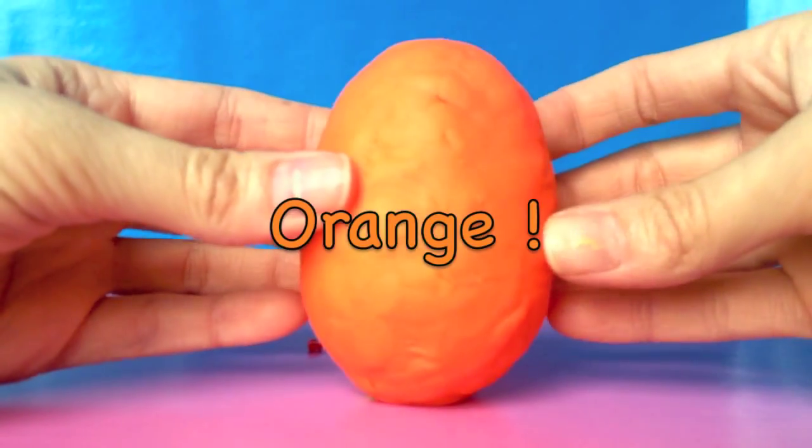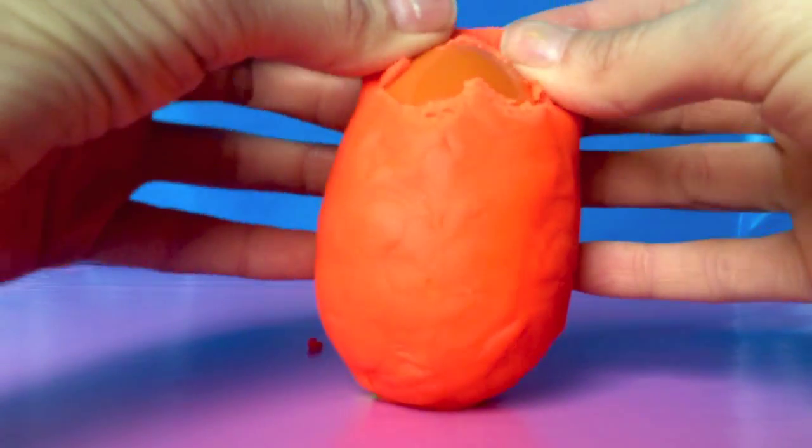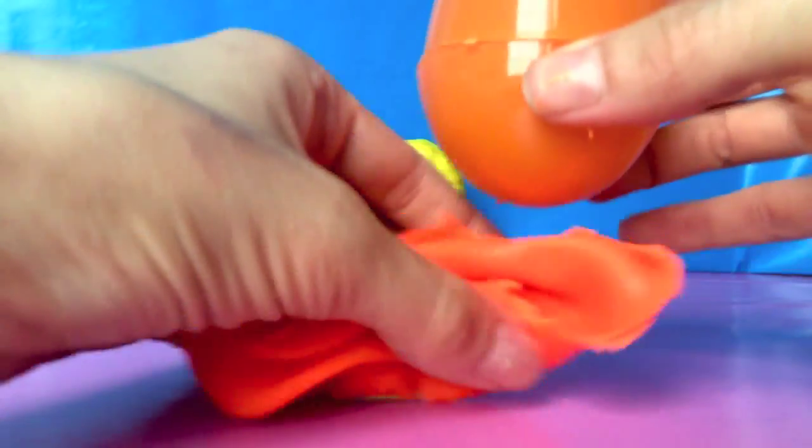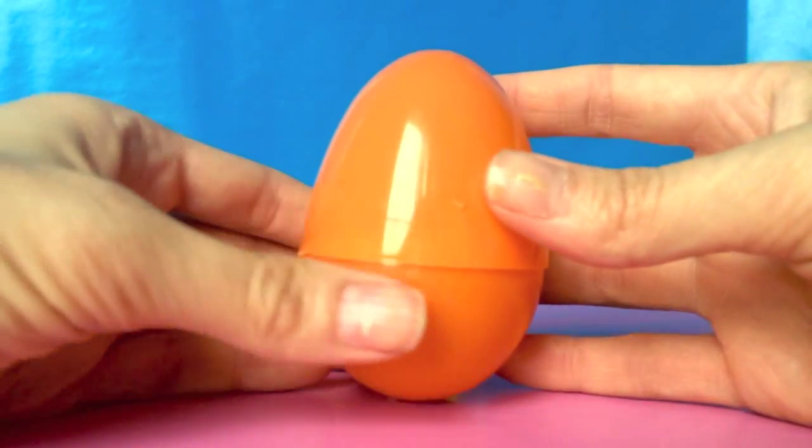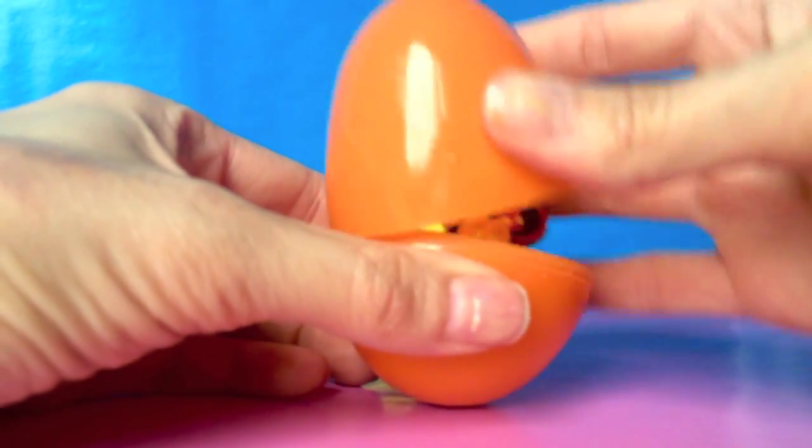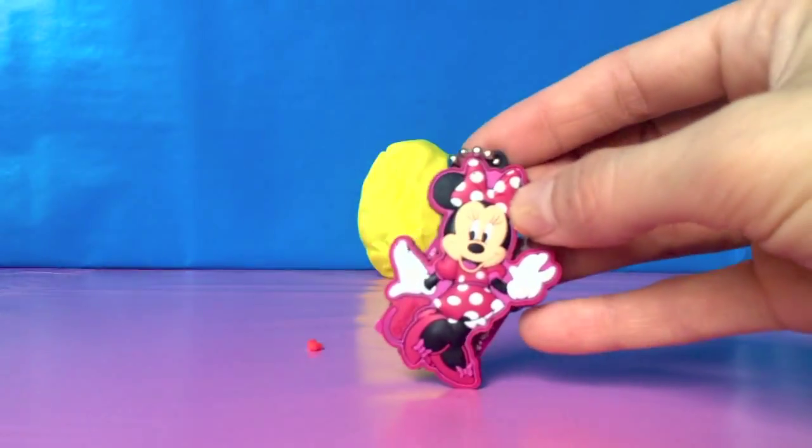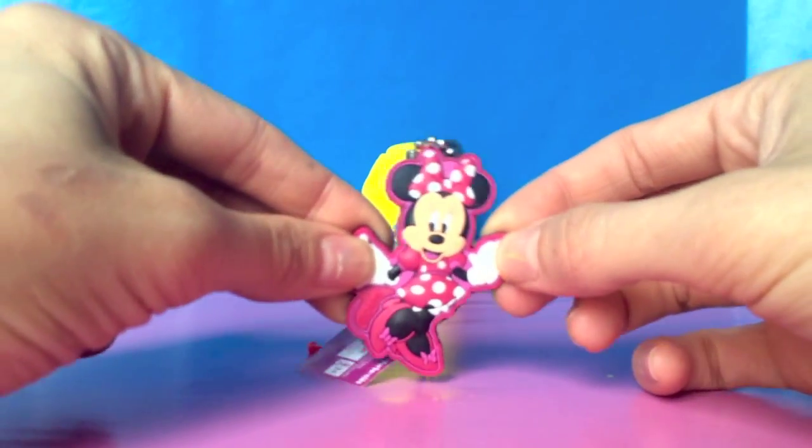What color is the egg? Look! It's an orange egg! What color is the egg inside? It's also orange! Let's open it! Minnie Mouse! Wee!